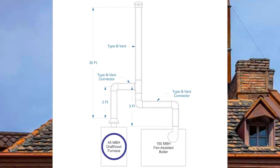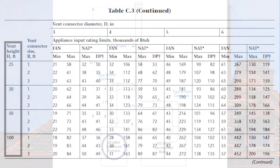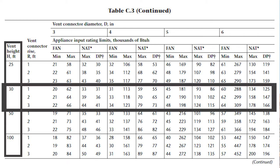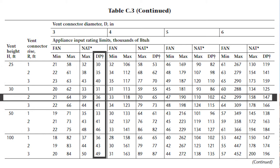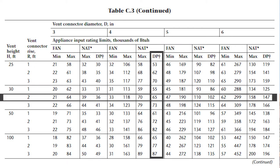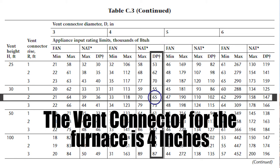Let's look at the draft hood equipped furnace first. Coming down to the 30-foot vent height, across on a two-foot vent connector rise, going to NAT DP. The three-inch vent connector for NAT DP is 36,000 BTUs — not quite enough. Over to four inch is 65,000 BTUs. So I will have a four-inch vent connector for my furnace.